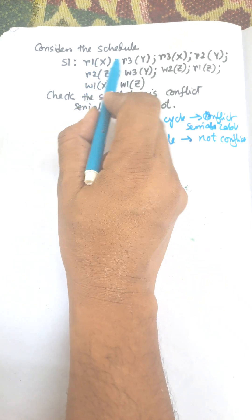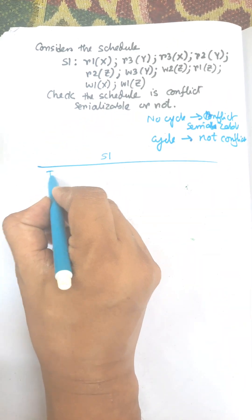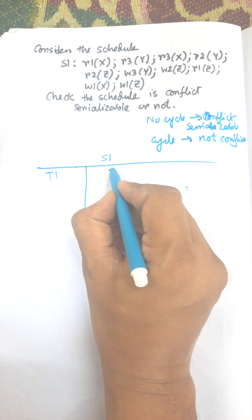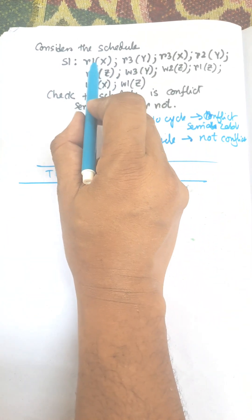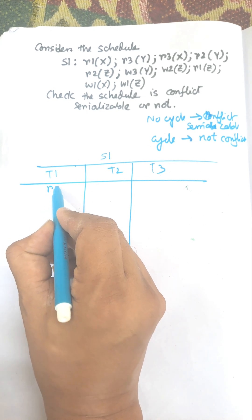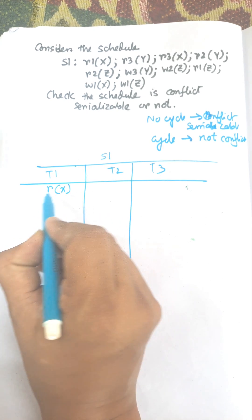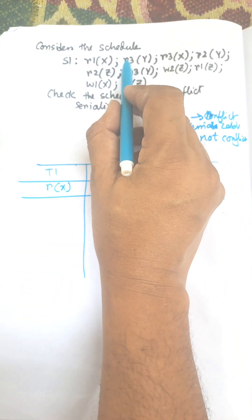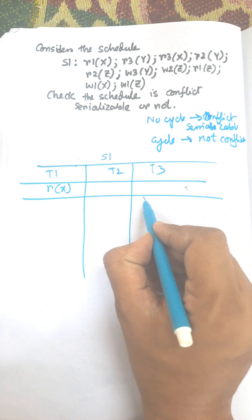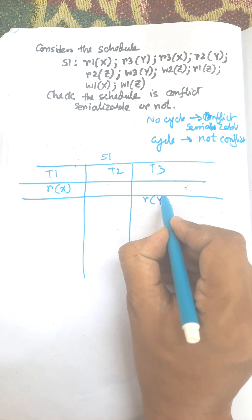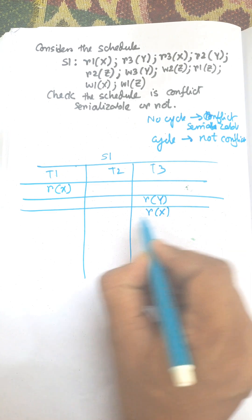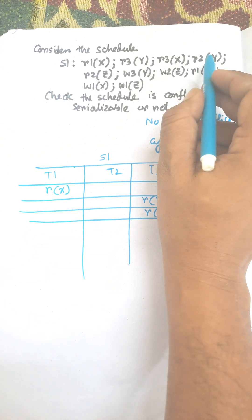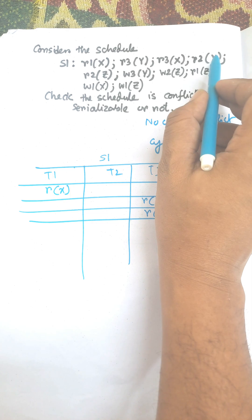There is T1, T3, T2. So there are three transactions. This one is T1 and this is T2 and third one is T3. First one is read X by T1. Second one is read Y by T3. Third one is read X by T2. Fourth one is read Y by T2.